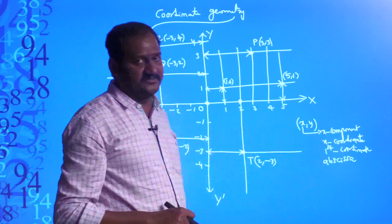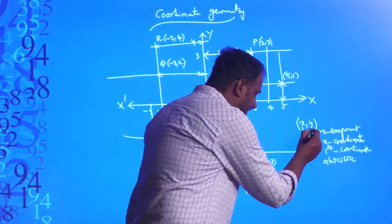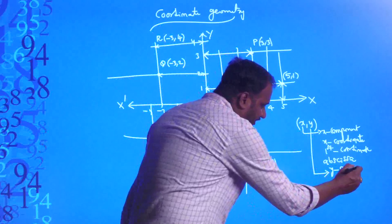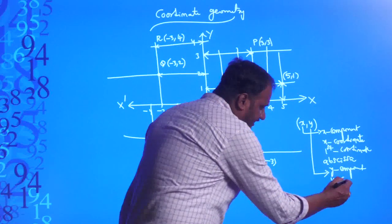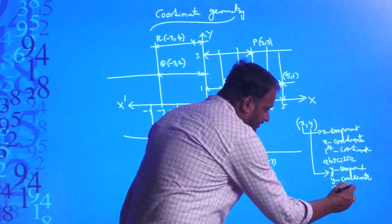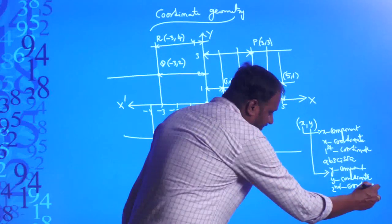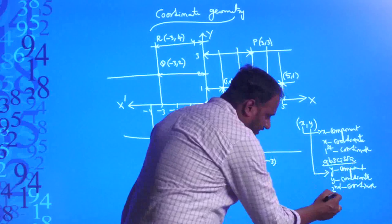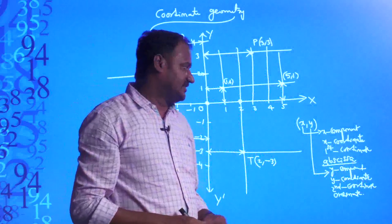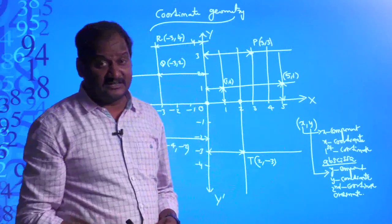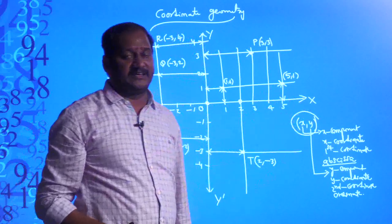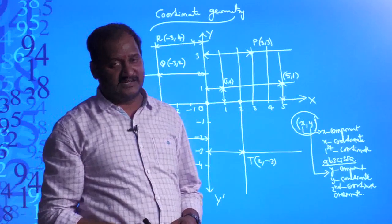So x has totally four names: x-component, x-coordinate, first coordinate, or abscissa. Similarly, y is called y-component, y-coordinate, second coordinate, or ordinate. So we can name any point (x, y) where x and y are said to be the x-component and y-component, or simply coordinates.